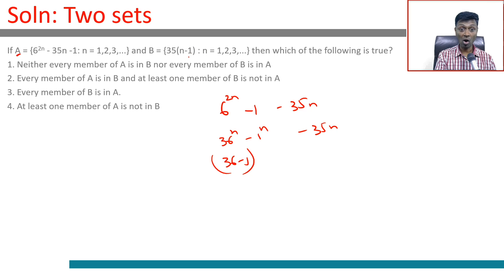B lists all multiples of 35, including 0. So every element of A is in B, and at least one member of B is not in A. 70 is not in A, 105 not in A. A jumps across multiples of 35 - after 0, it goes to a large number, then a much larger number.